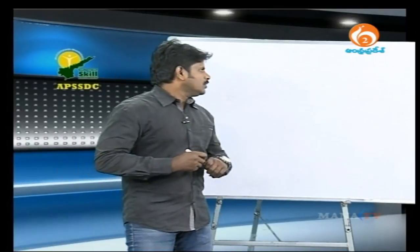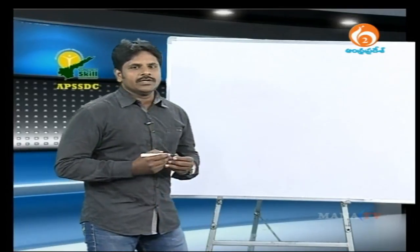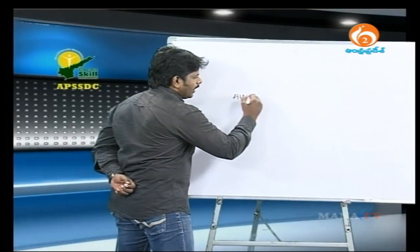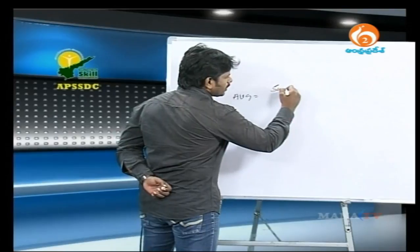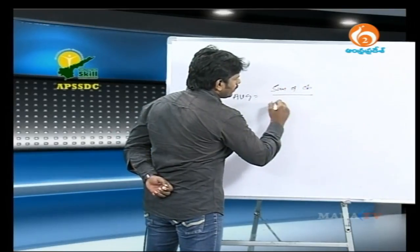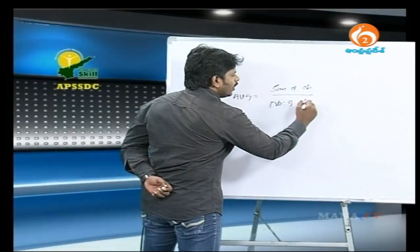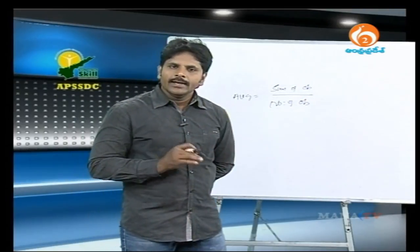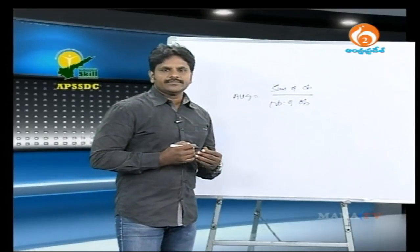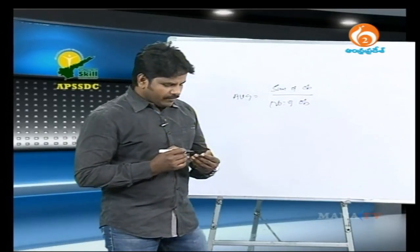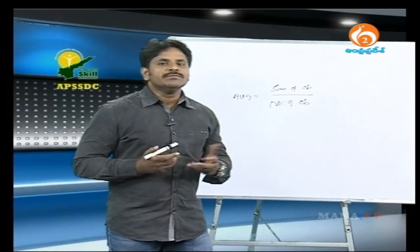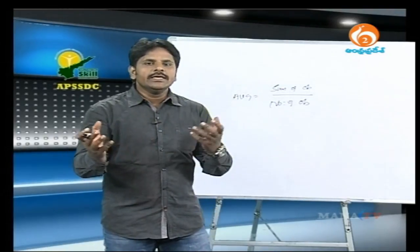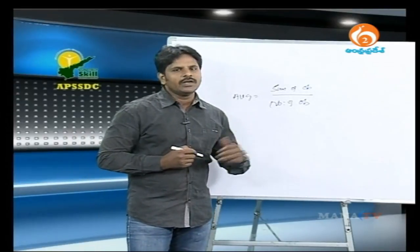Let us have a look. So, what is meant by average actually? Average we can say, average is equal to sum of observations divided by number of observations. For example, what is your average marks? This is called an average in general.